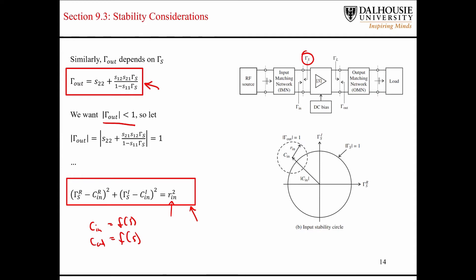What you'll have here is: assume for a minute that this is the stable region of the input reflection coefficient. That means from the point of view of the output of the amplifier, these are the impedances that are allowed on the input side — that would be the impedance seen looking into the input matching network. These impedances anywhere inside here will ensure that the system is stable.